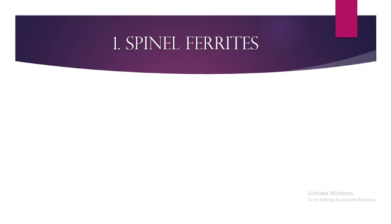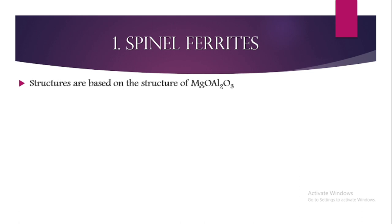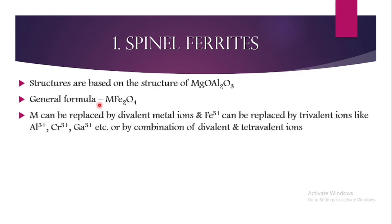First is spinel ferrite. To understand its structure we need a reference: spinels are a class of oxides generally based on the structure of MgO·Al₂O₃, containing aluminium and another metal such as magnesium. The structure of ferrites under this class is based on the naturally occurring spinel, and the general formula is MFe₂O₄, where M is a metal.